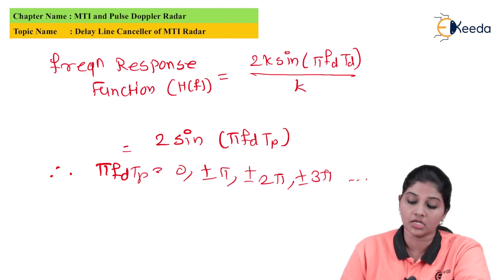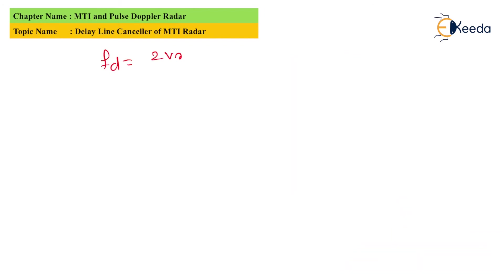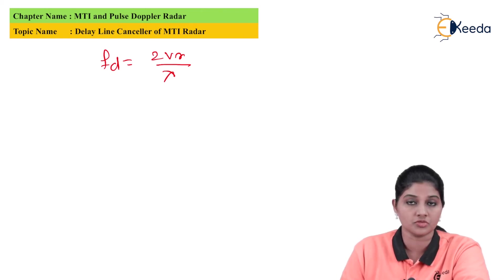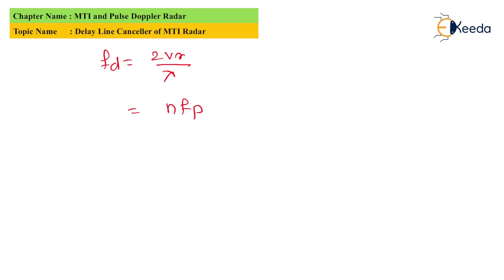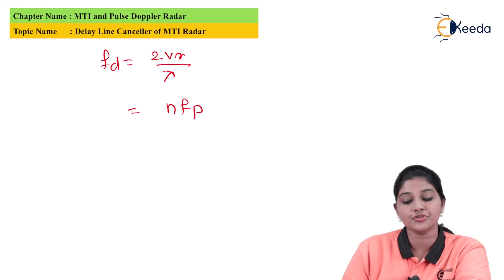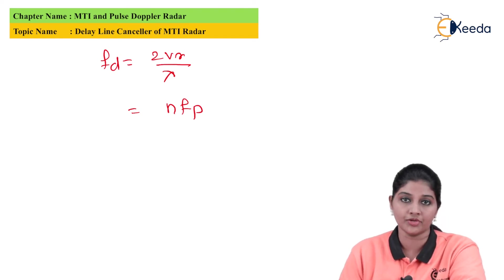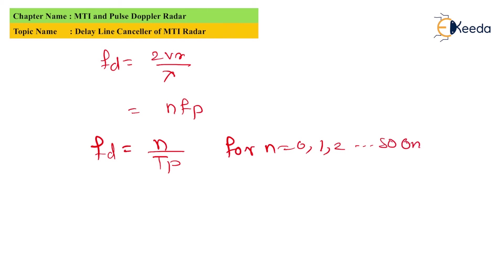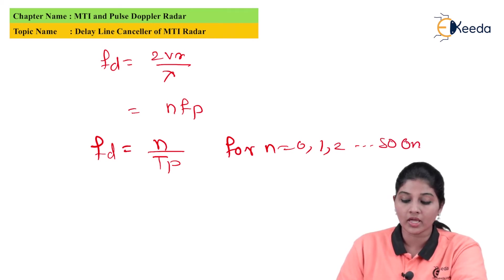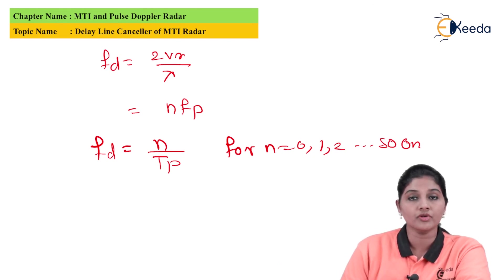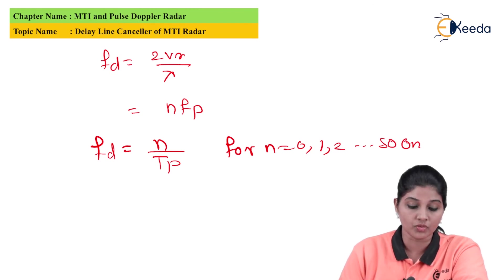The frequency response becomes zero when fd = n/tp, where n = 0, 1, 2, and so on. The Doppler frequency shift is given by fd = 2vr/λ. Substituting fp = 1/tp, the Doppler frequency fd becomes equal to n·fp, meaning the response nulls occur at the pulse repetition frequency and its harmonics.